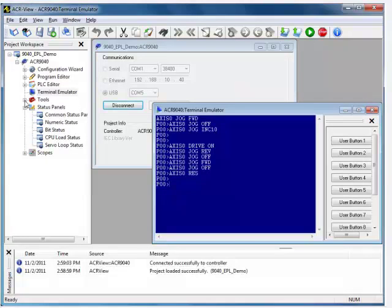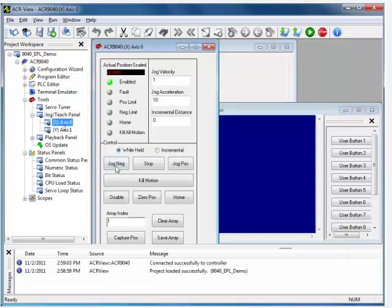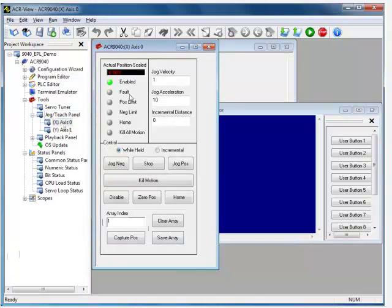Another helpful panel in the ACR view is under Tools in the Jog Teach. You have one for each axis. This shows you if you're enabled the actual position and this is scaled per user units. This will jog while held for this radio button. And then the incremental, you can do an incremental distance, either in the positive or the negative. You can stop the move in the middle of it as well too.